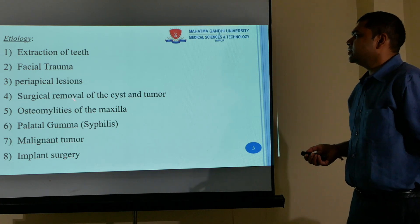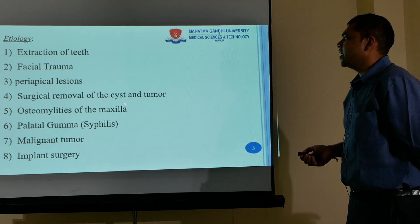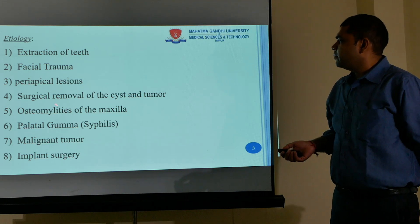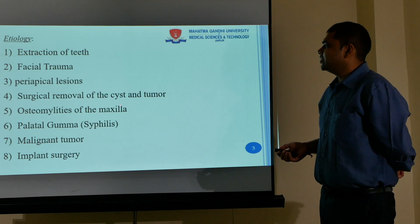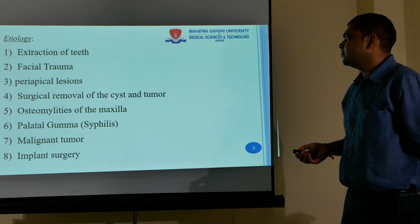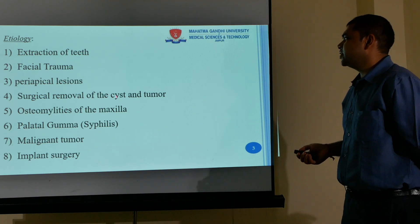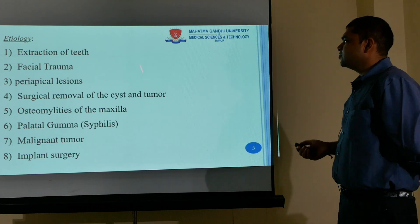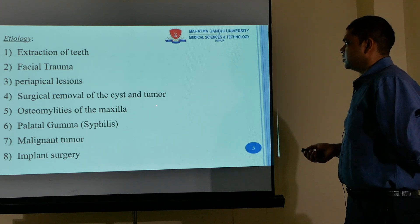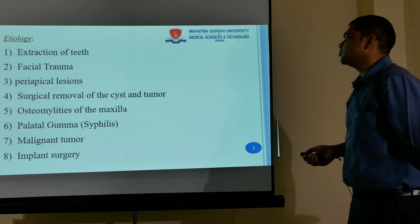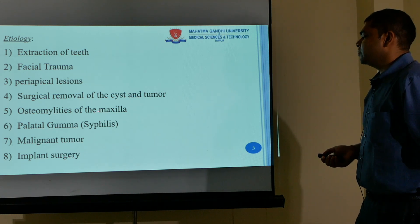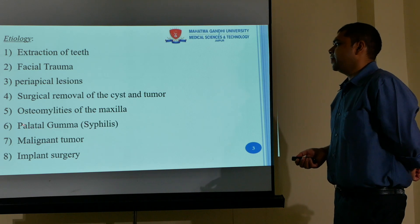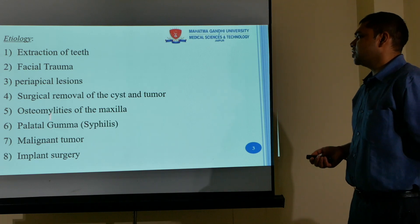While doing surgical removal of cysts or tumors, if the lining is attached to the maxilla — for example, an ameloblastoma whose lining extends to the maxillary sinus — removing it from the oral cavity can cause opening of the oral-antral fistula. Osteomyelitis of the maxilla, syphilis, or a palatal gumma can also cause the communication.